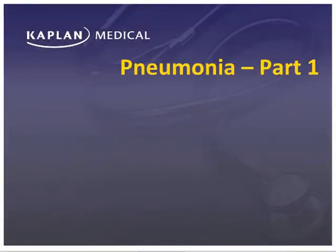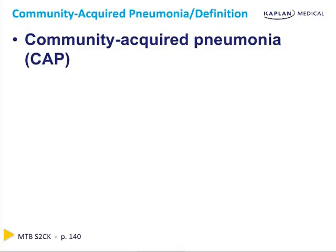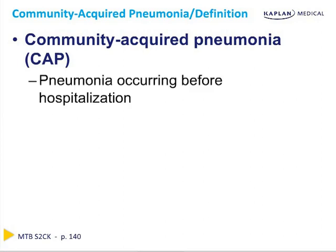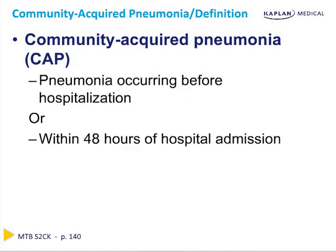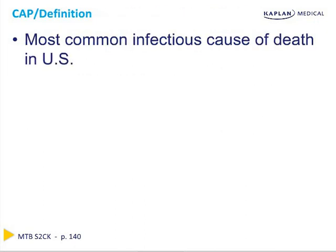In this lecture, we're going to discuss community-acquired pneumonia. Community-acquired pneumonia is defined as a pneumonia occurring outside of the setting of hospitalization, or a pneumonia occurring within 48 hours of hospital admission. In that situation, less than 48 hours is not enough time for the pneumonia to have been picked up in the hospital. It's important that we learn about community-acquired pneumonia because it is the most common infectious cause of death in the United States.